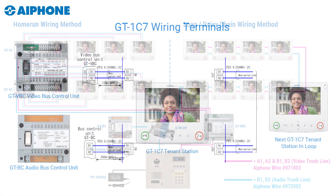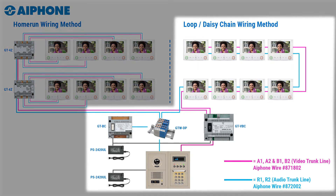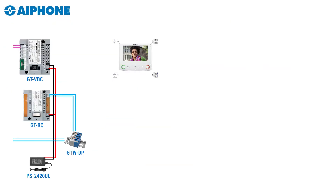Here's a wiring diagram with two trunk lines — one looped and one home run. We're going to concentrate on the right hand side loop wiring. For our first apartment station, B1 and B2 are used for your video trunk line, and R1 and R2 are used for your audio trunk line.